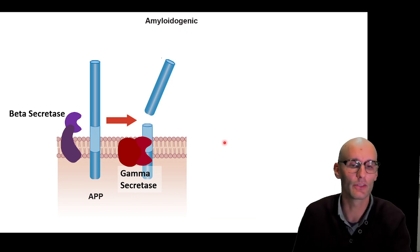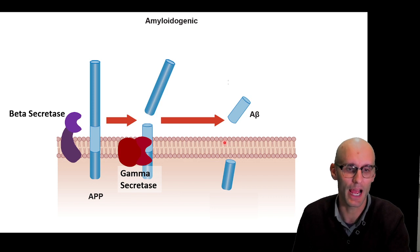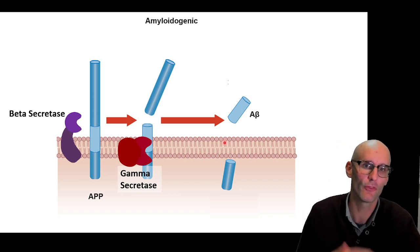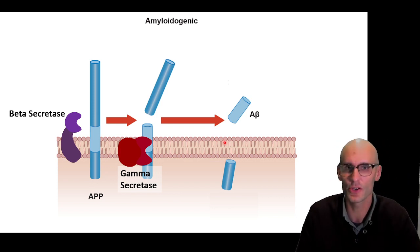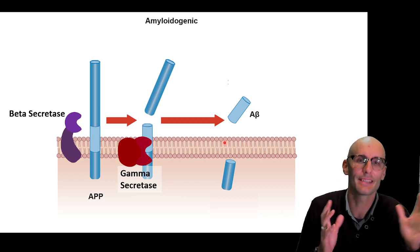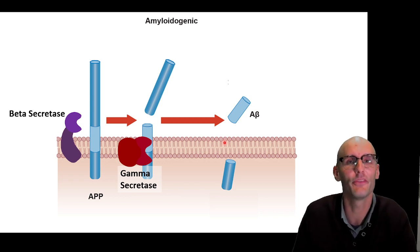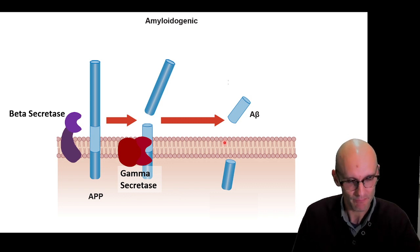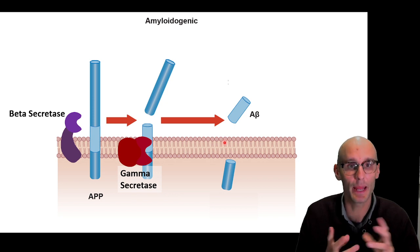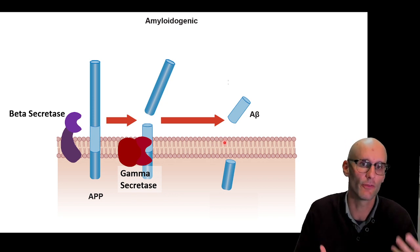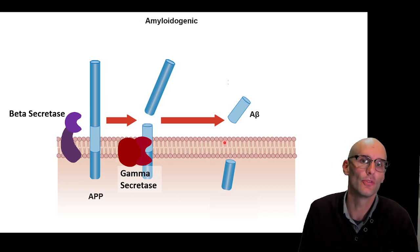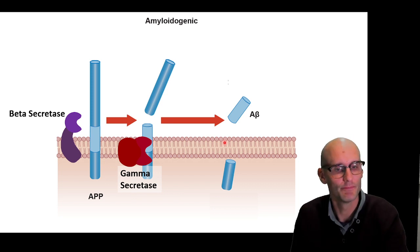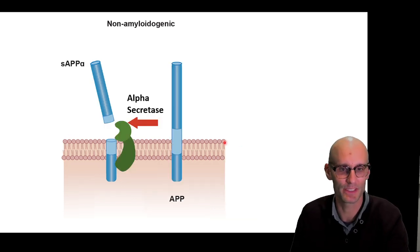So the gamma secretase will then cleave it below, and we'll end up with this small fragment of 40 to 42 — sometimes 43, sometimes a little more — amyloid fragment. And this is that amyloid fragment that can then stick together to form those damaging oligomers and fibrils in Alzheimer's disease.